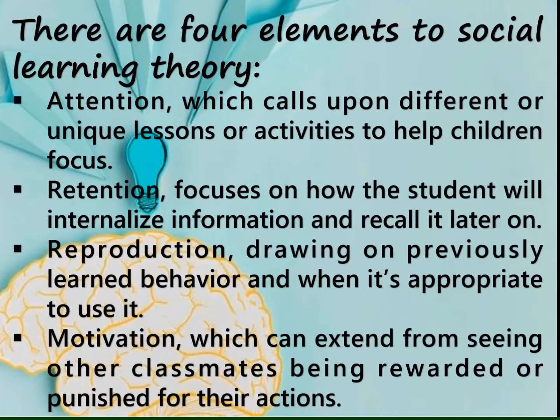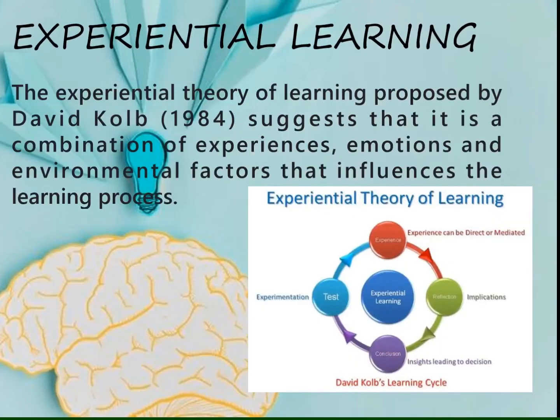The four elements of social learning theory are: number one, attention — calling upon different or unique lessons or activities to help children focus; number two, retention — focusing on how the student will internalize information and recall it later on; number three, reproduction — drawing on previously learned behavior and knowing when it is appropriate to use it; and number four, motivation — which can extend from seeing other classmates being rewarded or punished for their actions.